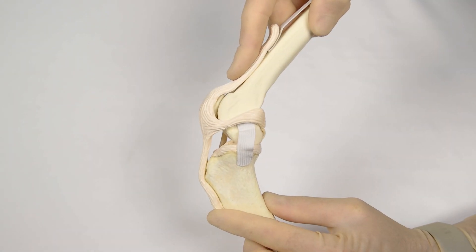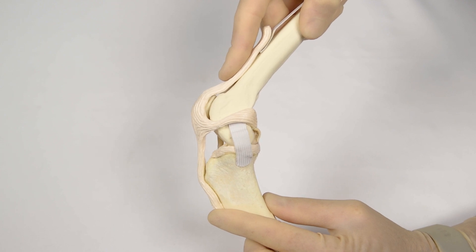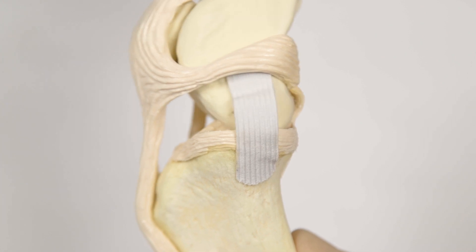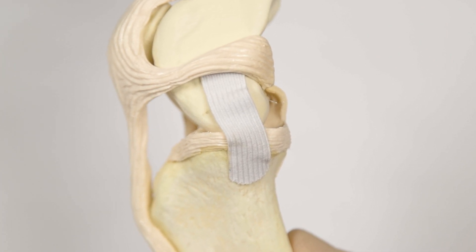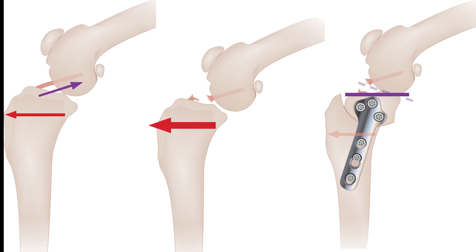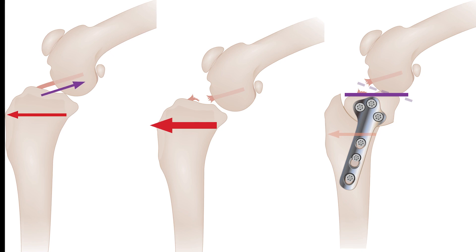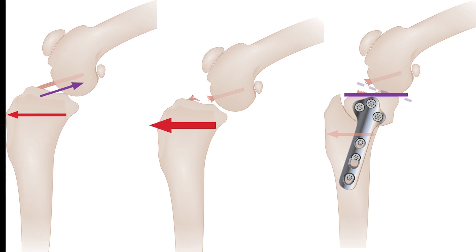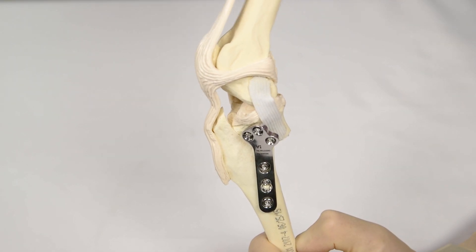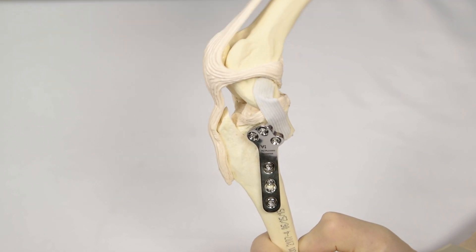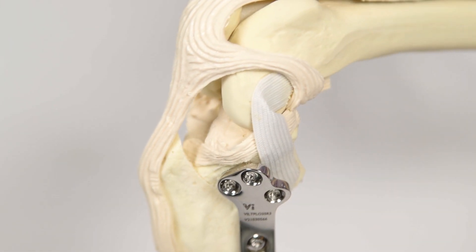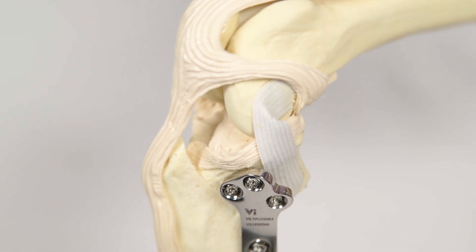When the cranial cruciate ligament is ruptured, the stifle is unstable with abnormal cranial movement of the tibia relative to the femur during weight-bearing. Restabilization of the stifle is achieved via creation of an osteotomy and rotation of the tibial plateau to reduce the tibial plateau angle to five degrees. Reduction of the tibial plateau angle prevents the abnormal cranial movement of the tibia relative to the femur that occurs as a result of cranial cruciate ligament disease or injury.